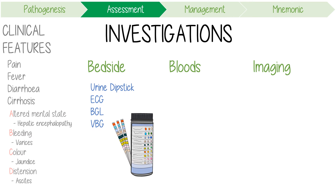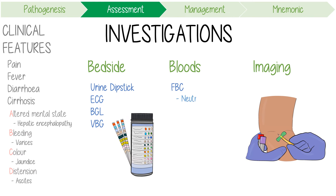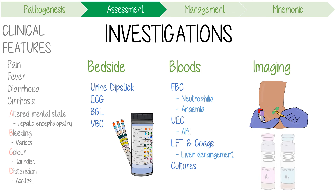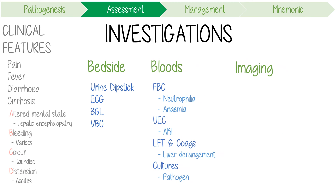Standard blood tests might include a full blood count to check for neutrophilia and anemia from bleeding varices. UECs will help you identify a kidney injury. LFTs and coagulation studies are vital as they will help you quantify hepatic decompensation. Blood cultures may assist in identifying the pathogenic organism.